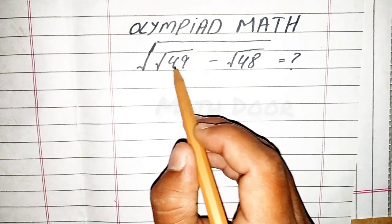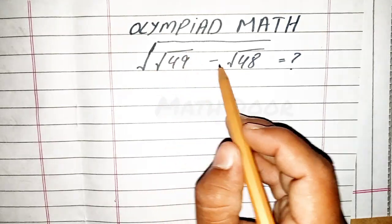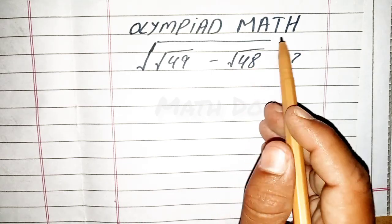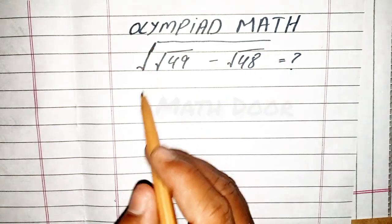Today our topic is the square root of 49 square root minus 48 square root.